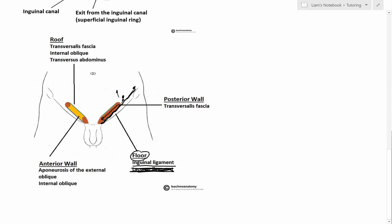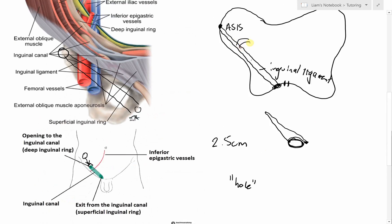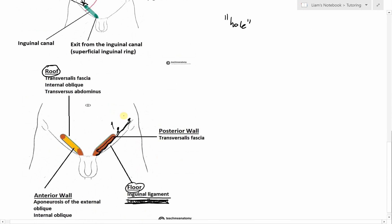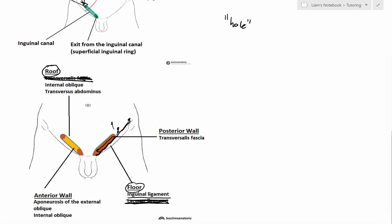If you look up while walking through this canal, you see the roof. The roof is made of those arching fibers we talked about — the arching fibers of internal oblique and transversus abdominis. There is some contention depending on the resource, but I was always taught that the roof is those arching fibers of internal oblique and transversus abdominis. So you're walking on the inguinal ligament with those fibers forming the tunnel above you.